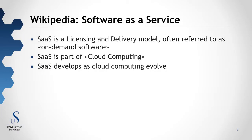The first paper is about software as a service, SaaS. It is a licensing and delivery model, often referred to as on-demand software. Software as a service is an integrated part of cloud computing, and it develops as cloud computing evolves in society.